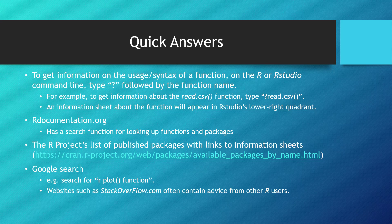You can also go to the website rdocumentation.org, which has a search function for looking up functions and packages. As I mentioned in the previous video, the R project website has a list of published packages with links to information sheets. And of course, there's Google, which I have often used. A simple search for R with the name of the function and the word function will often lead you to websites such as stackoverflow.com, where you can find advice from other R users.